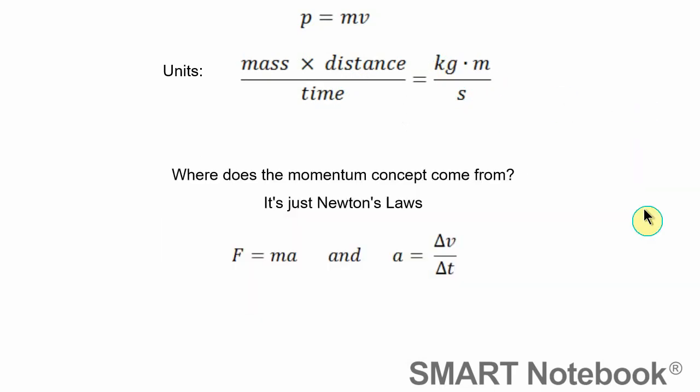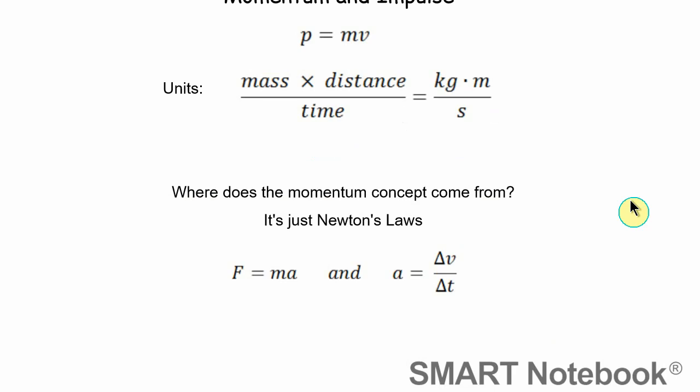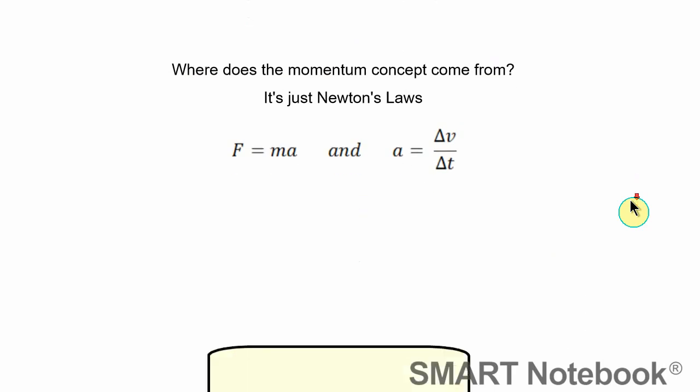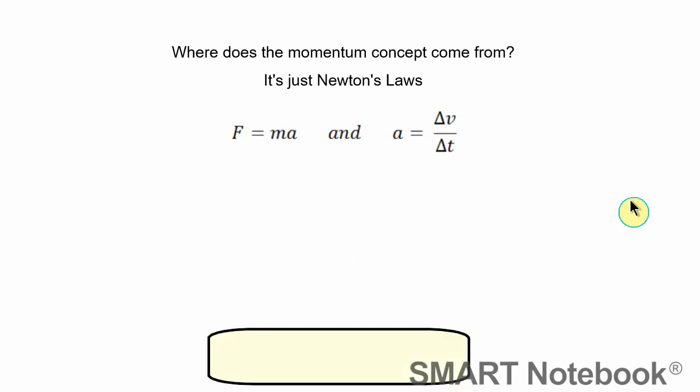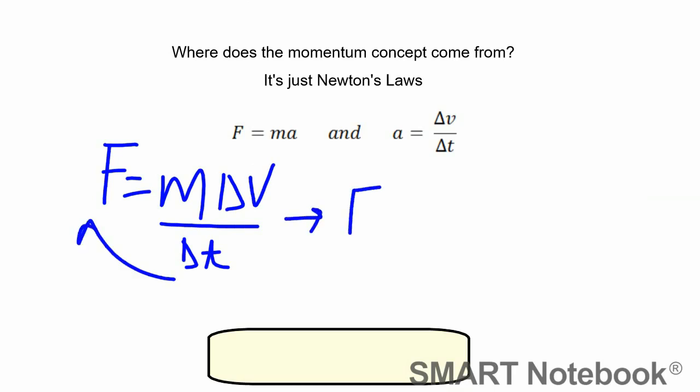So where does this come from? Where's this idea of the product of mass and velocity coming from? Well, it's actually just a reconceptualization of Newton's laws. We're going to start with F = ma and use the definition of acceleration, which is the change in velocity divided by the change in time, a = ∆v/∆t. So we have F equals mass times acceleration, but instead of acceleration, I'm going to write in ∆v/∆t. We're then going to multiply ∆t over to the other side, and so we get F∆t equals...